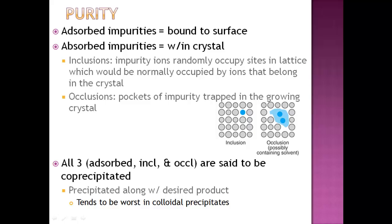There's inclusions and occlusions. Inclusions are impurities that are randomly occupying sites in the lattice, which basically could be occupied by ions that are supposed to be in that crystal. So an example of that is this picture right here on the left. An occlusion is pockets of impurity, and they're kind of trapped inside the crystal. And as you can see there, possibly they might contain some solvent or something.